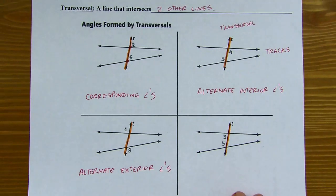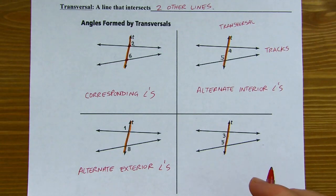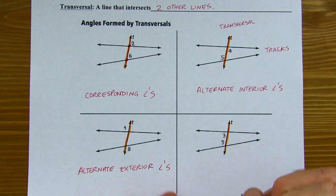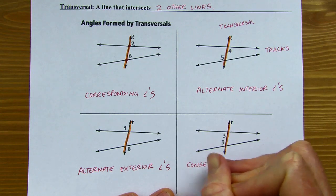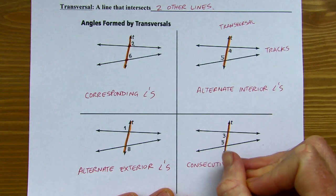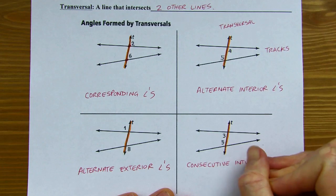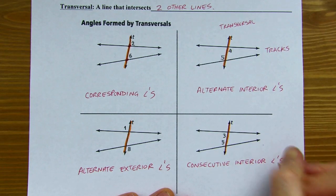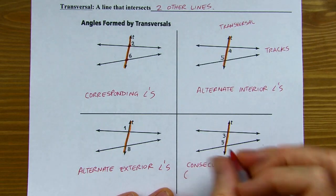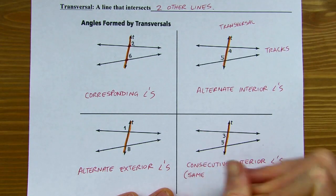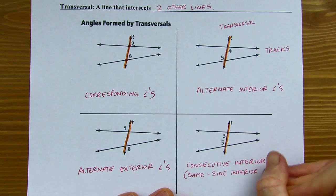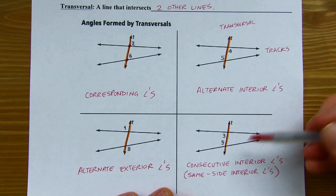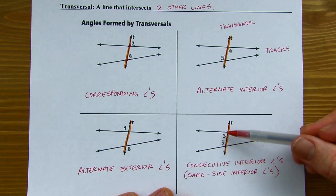A lot of geometry books call these same side interior angles, and that's fine. But our book calls these consecutive interior angles. Consecutive means in a row, so those angles are adjacent to each other — next to each other and inside the tracks.